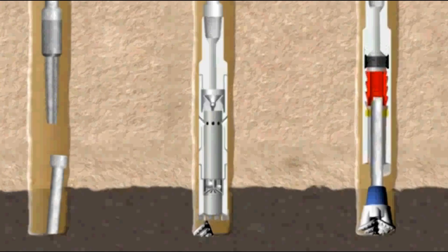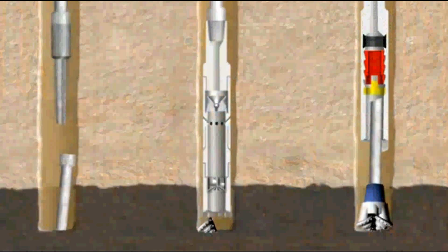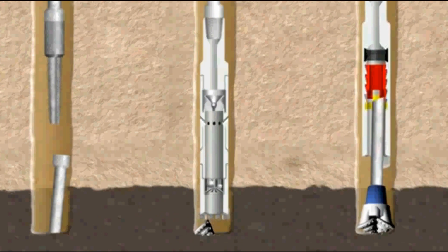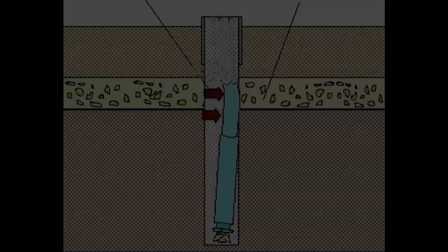The drill string is then reinserted with a set of jars or devices that deliver sharp blows. Once in place, the jars are activated, sometimes repeatedly, delivering downward hammer blows to the stuck pipe. In most cases, this approach is successful and the stuck pipe can be quickly dislodged and recovered.